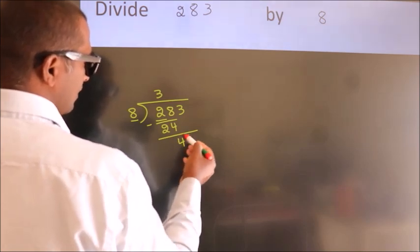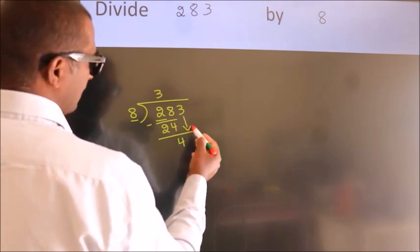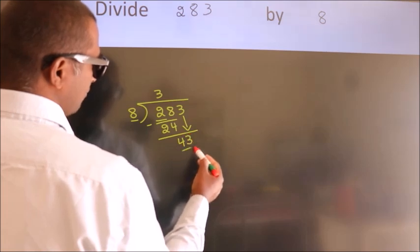After this, bring down the beside number. So, 3 down. So, 43.